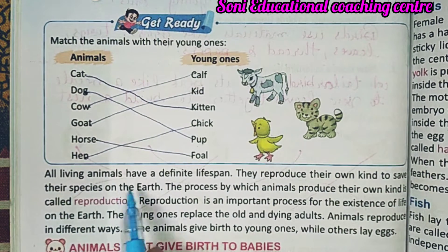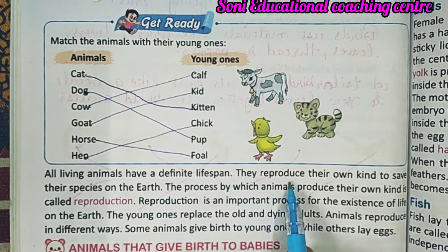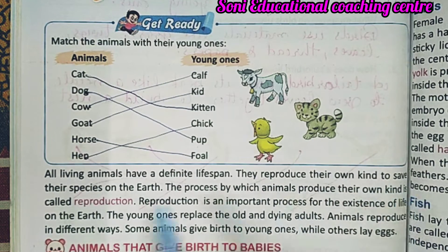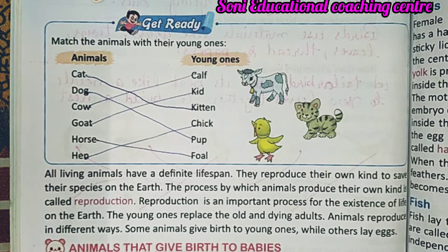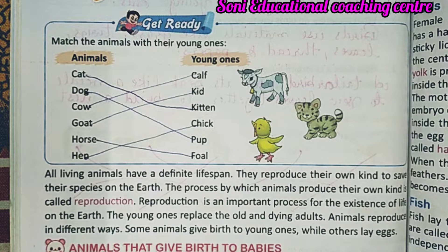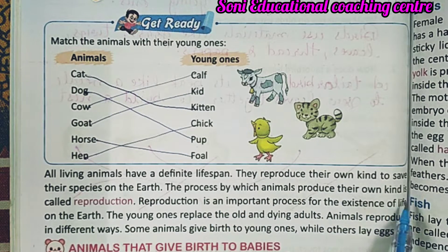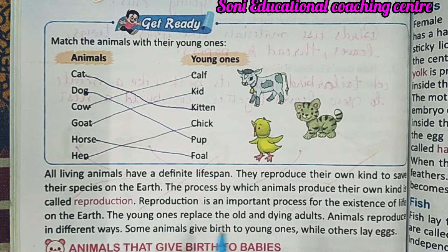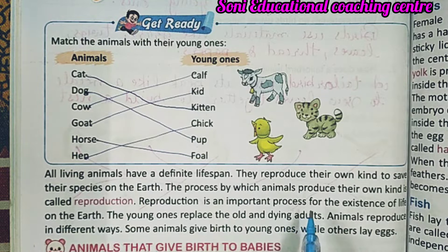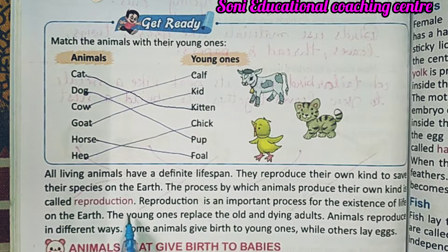All living animals have a definite life span. They reproduce their own kind to save their species on the earth. जो animals होते हैं, उनका एक अपना जीवन चक्र होता है और वे अपनी प्रजाति को बचाने के लिए अपने तरीके की दूसरी प्रजातियों को पैदा करते हैं। The process by which animals produce their own kind is called reproduction.